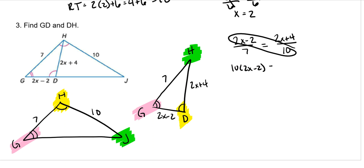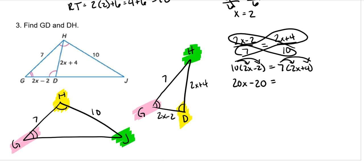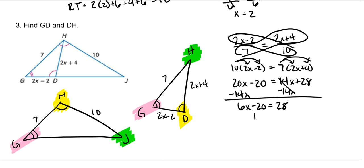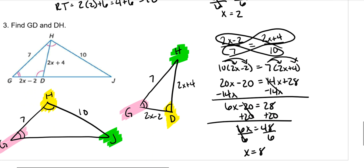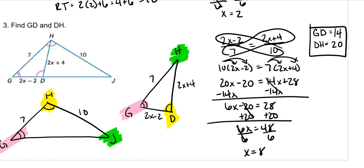Cross-multiplying: 10 times (2X minus 2) equals 7 times (2X plus 4). Distributing gives 20X minus 20 equals 14X plus 28. Subtracting 14X gives 6X minus 20 equals 28. Adding 20 gives 6X equals 48, so X equals 8. Therefore GD equals 2 times 8 minus 2, which is 16 minus 2, giving GD equals 14. And DH equals 2 times 8 plus 4, which is 16 plus 4, giving DH equals 20.